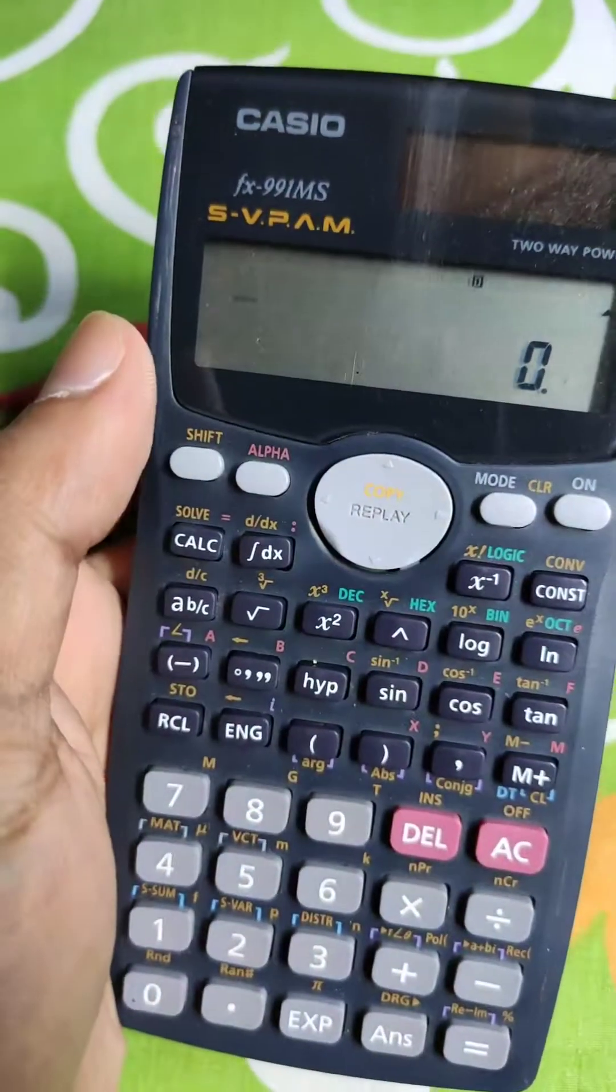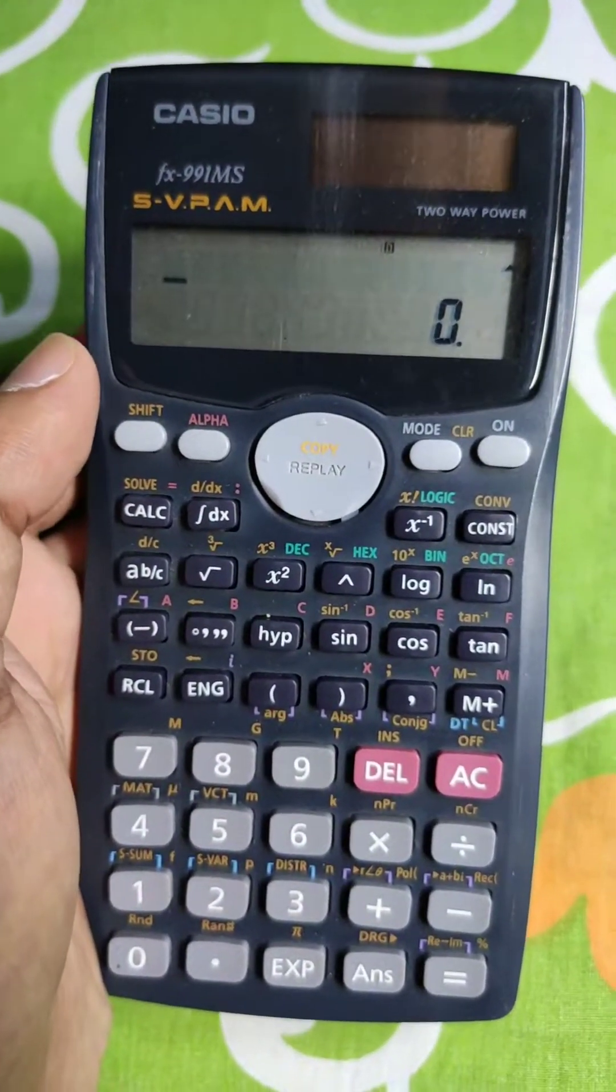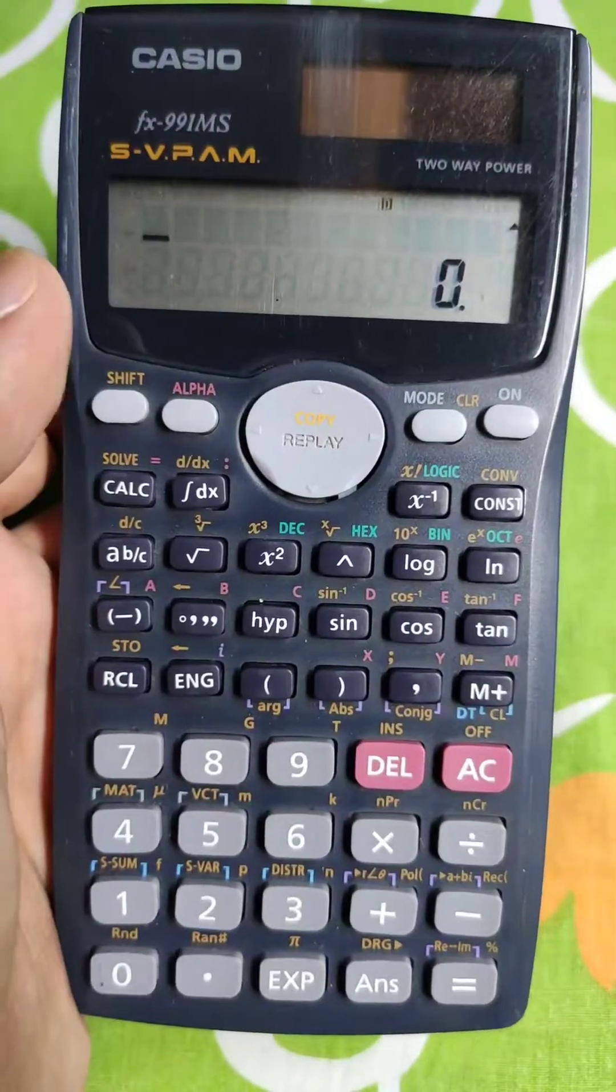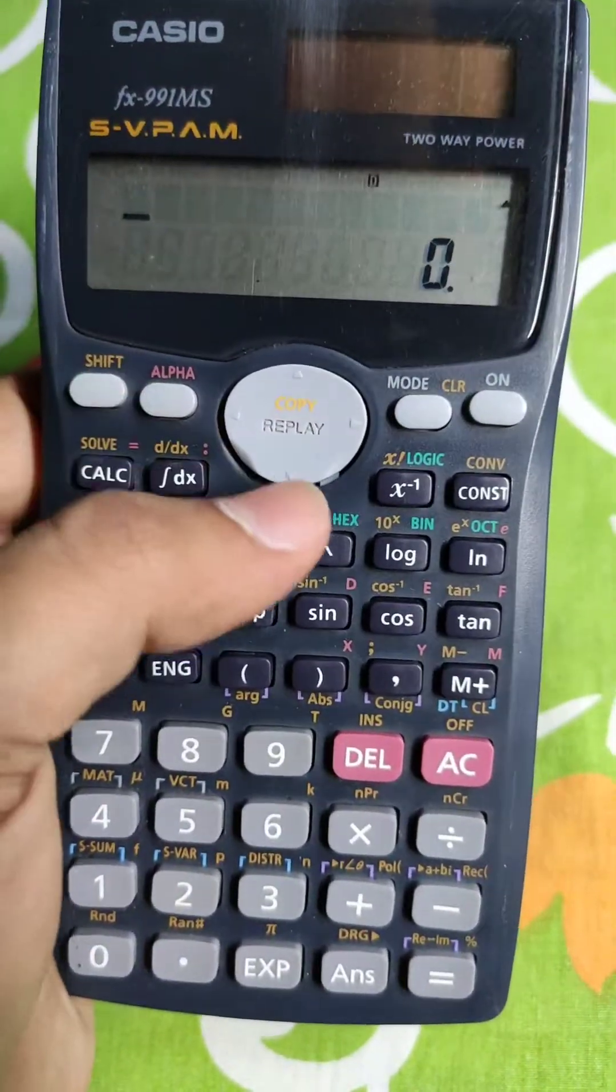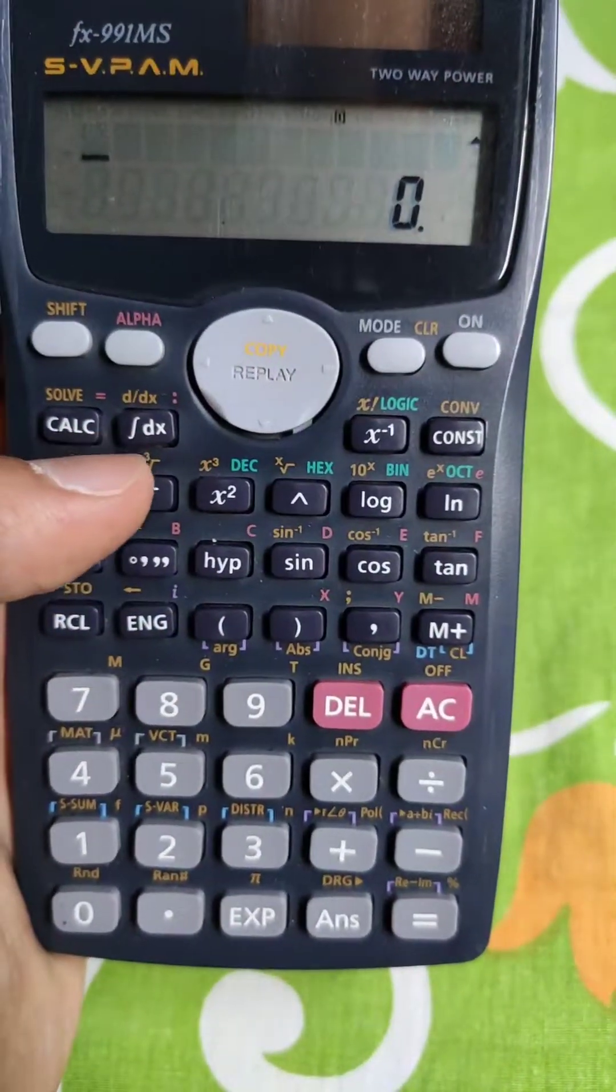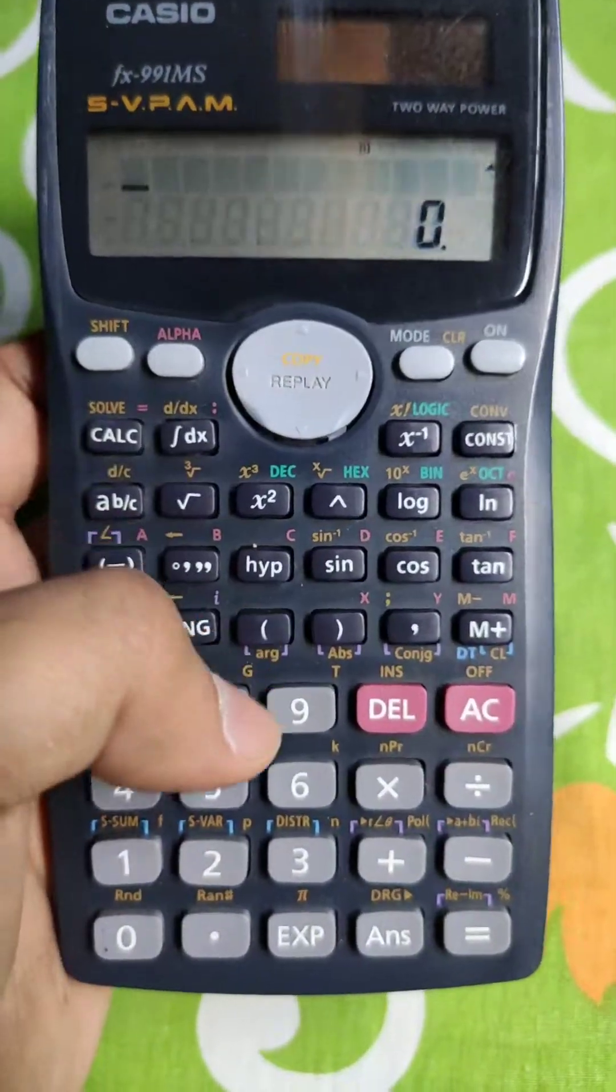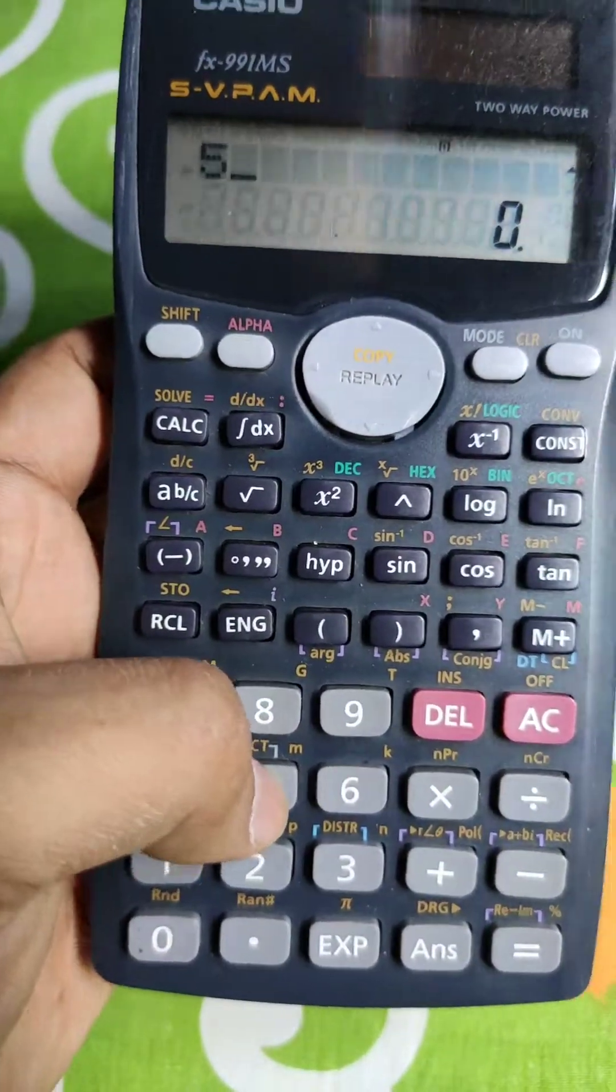Now let's move towards nth root. We can calculate the nth root by two methods. First method, the easier method. Say we are calculating the fifth root. Then we press 5 first.